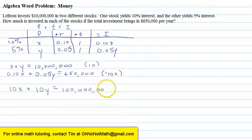Now let's look at the second equation. Negative 100 times 0.10X is negative 10X. Negative 100 times 0.05Y is negative 5Y. And negative 100 times 650,000 is negative 65 million.